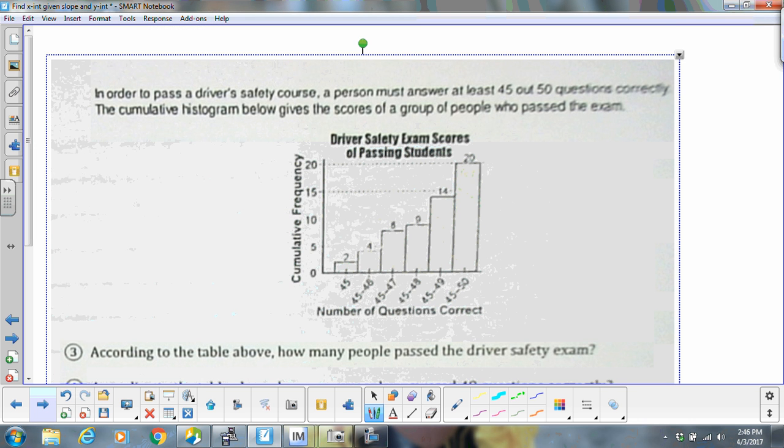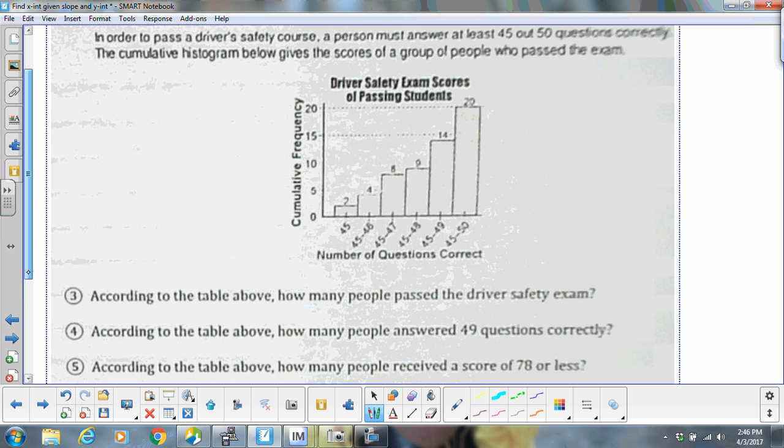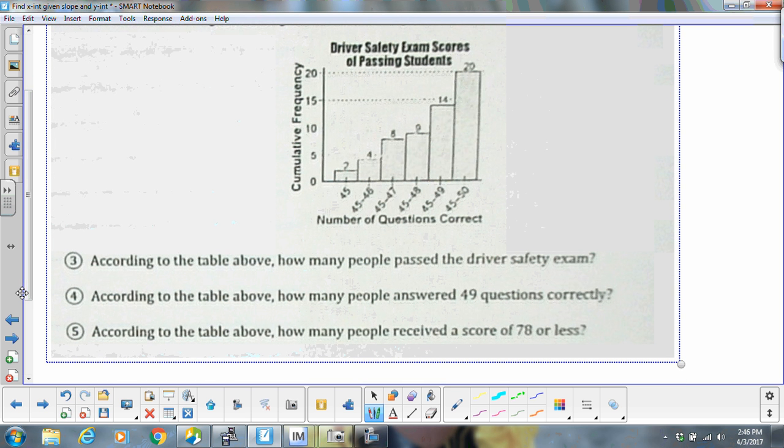Alright, we're going to skip over here to the last histogram. They gave you your numbers on top for these. According to the table, how many people passed the driver safety exam? And remember, this is all passing, so you would just add those up to get your answer for number 3.